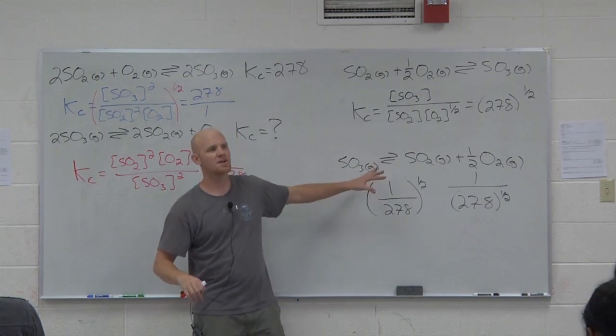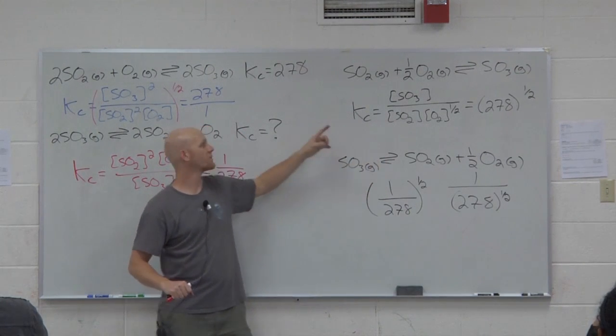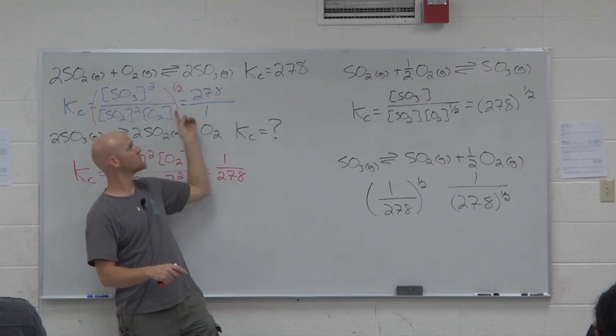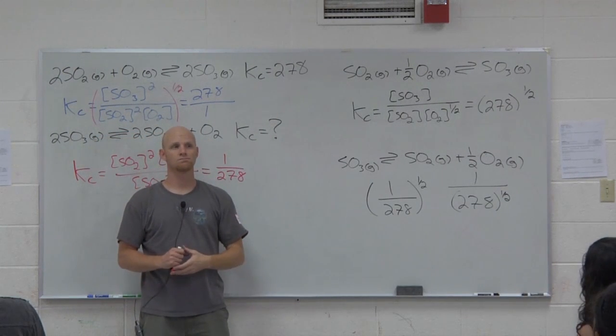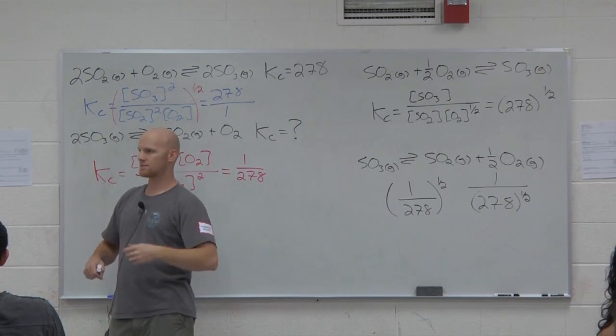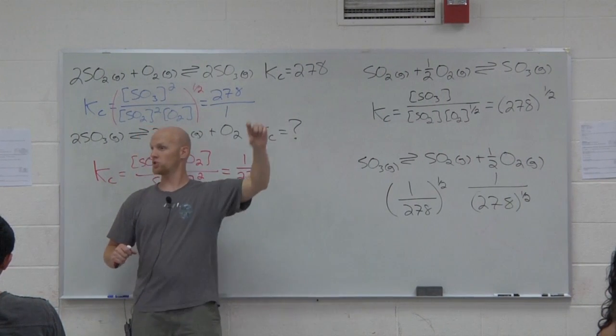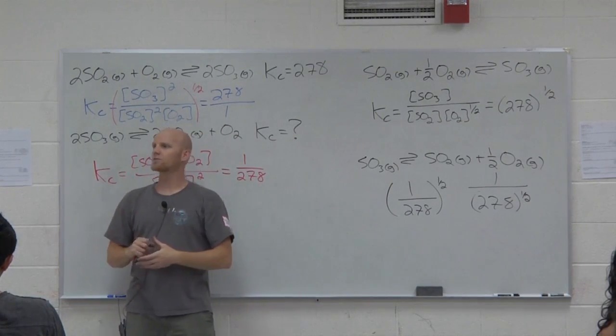If you ever get hosed on one of these problems, what should you probably do to figure it out? The long way. Write out the expressions for both reactions and compare them and go from there. If it's doubled, you'd square it. Second, you know, if you triple all the coefficients, it'd be cubed. If you tripled and reversed it, it'd be that a negative 3 power, so on and so forth.